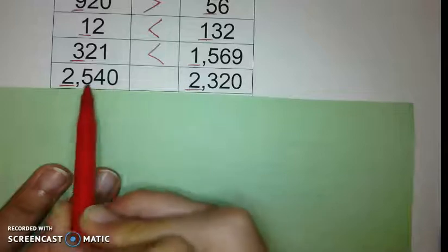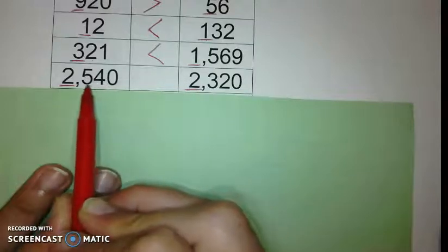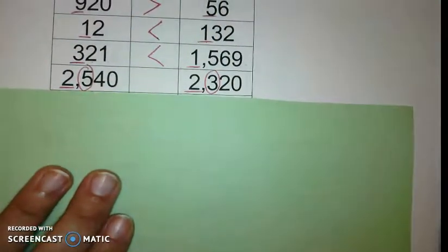So I have to go back to the next place value, the hundreds. So we have 500, 300. That's exactly right.